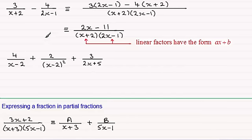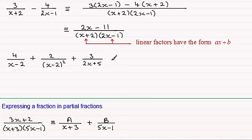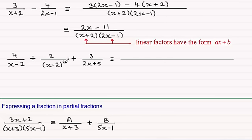Now this next example differs a bit. We've got three fractions, and in the denominators we've got a linear factor, another linear factor, but this third factor appears different. We would set up our fraction looking for the lowest common multiple of these denominators, which would be (x - 2)² times (2x + 5).